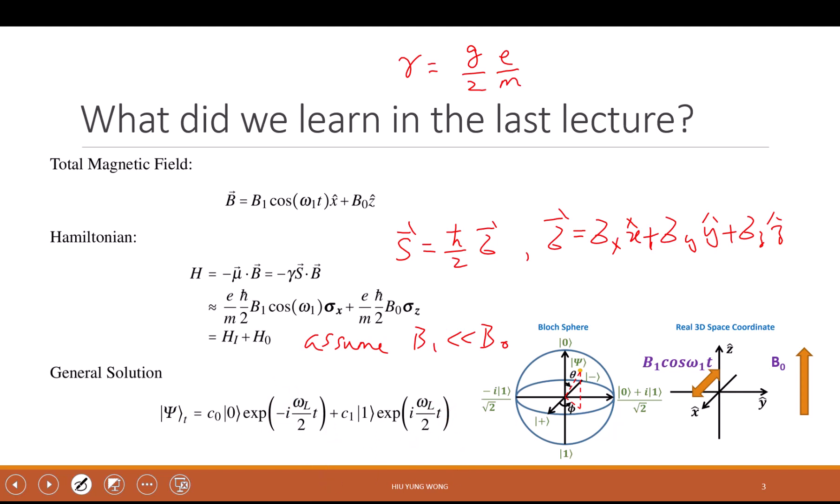This one we know very well because this is just the precession. If you only have the magnetic field pointing up, these are the possible two solutions. Now, omega L, what is omega L? That's the Larmor frequency. From there, it is related to the splitting of the magnetic field.